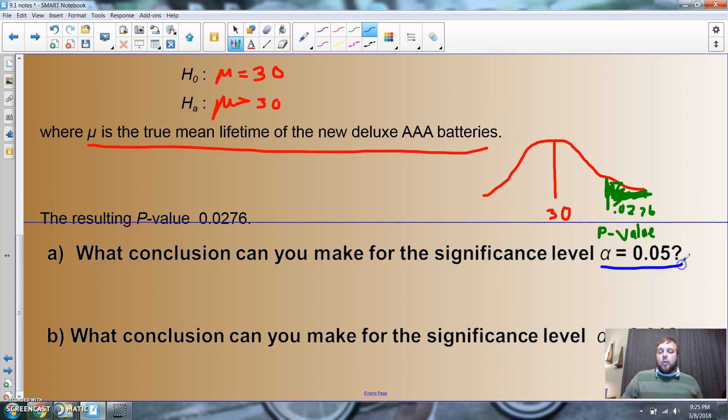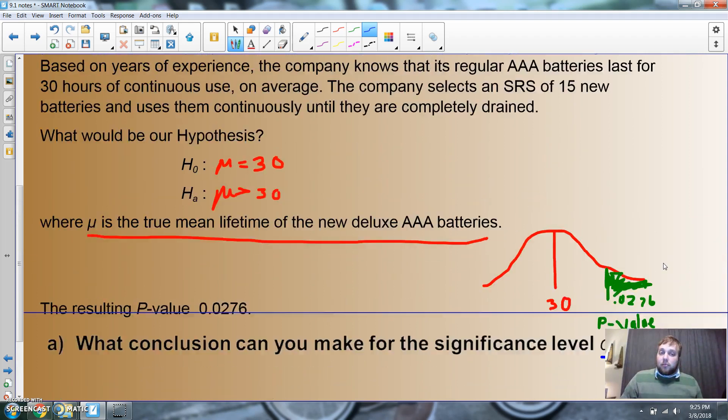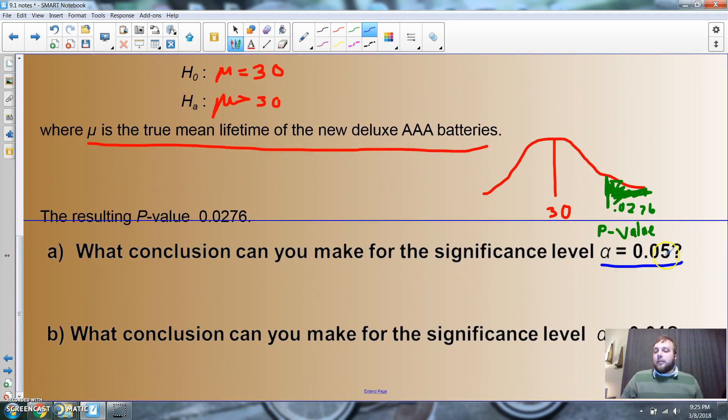Here's the deal. We're going to compare our p-value to our significance level. If our significance level is set at five percent, that means we're drawing the line when there's five percent below. Basically, if there's a six percent chance or ten percent chance, it's still possible. But if it's five percent or under, this deal is actually a good thing because we want these new batteries to last longer. So I would reject the null.